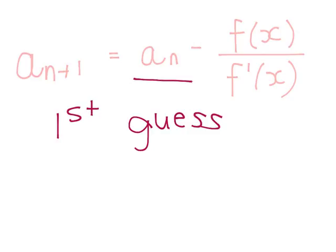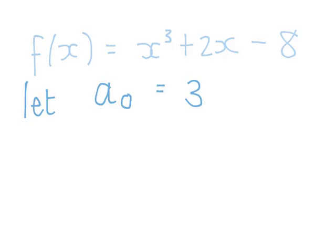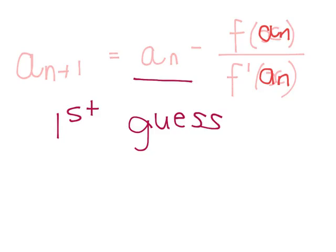So let's do a numerical example. So now we want to find out the x-intercept of this graph. And they tell us that they want our first guess, denoted by a0, should be 3. The first thing we need to do is to get f dashed x, because we need it in our formula.